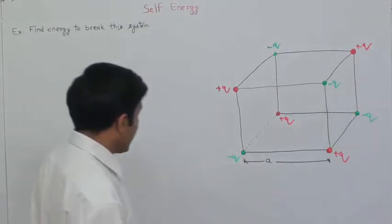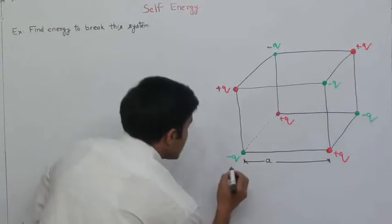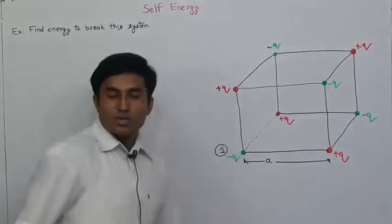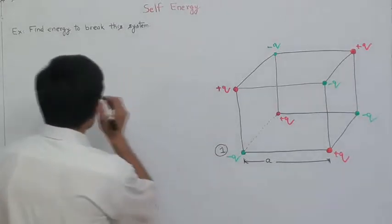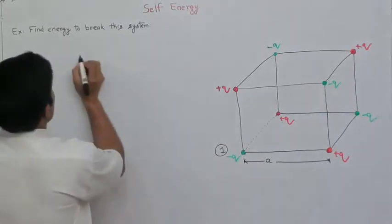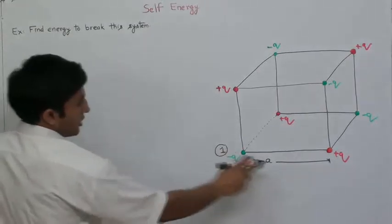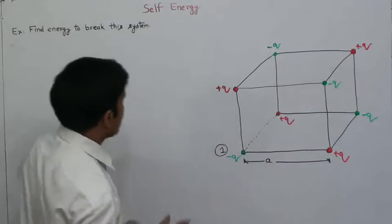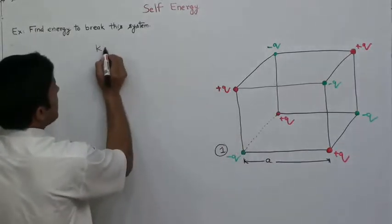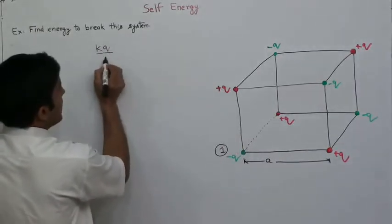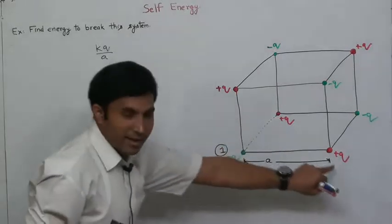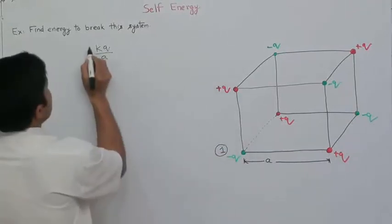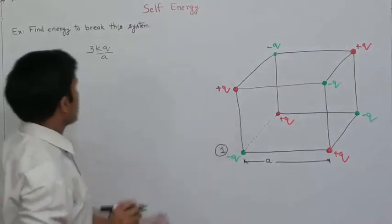What is the potential at point one? The potential is equal to, from the positive charges, Kq by a for this, this, and this. So the potential is three times Kq by a because of these three positive charges.